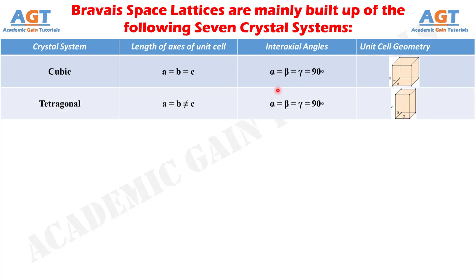The second crystal system is the tetragonal system. In Bravais lattices with tetragonal systems, the lengths of axes A and B are equal, but A and B are not equal to the length of axis C of the unit cell. Their interaxial corresponding angles alpha, beta, and gamma are equal to one another and they are all 90-degree angles, as we can see in an example of tetragonal system in this figure.